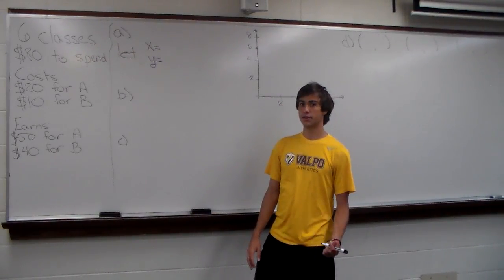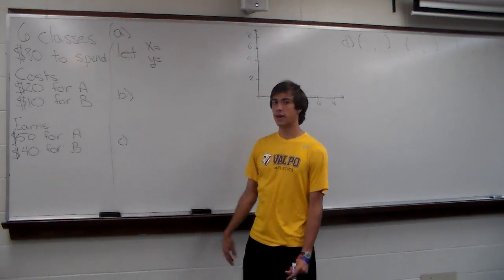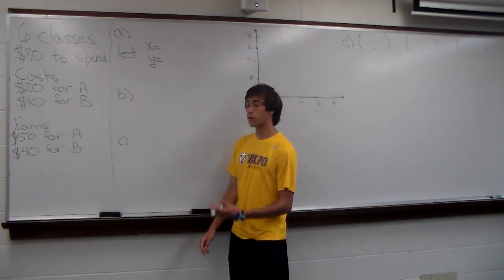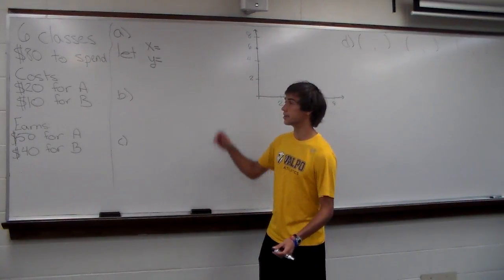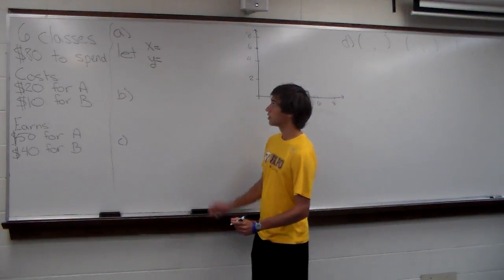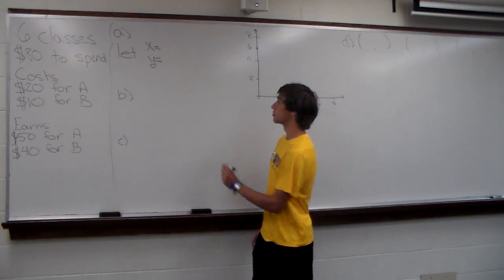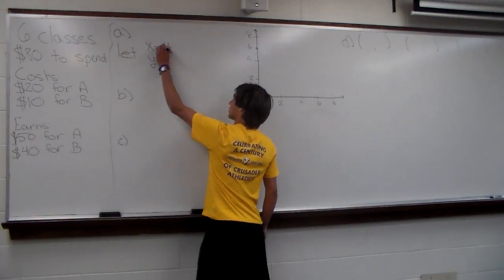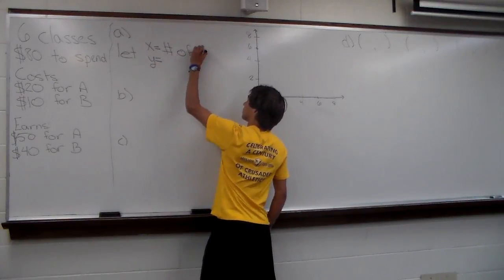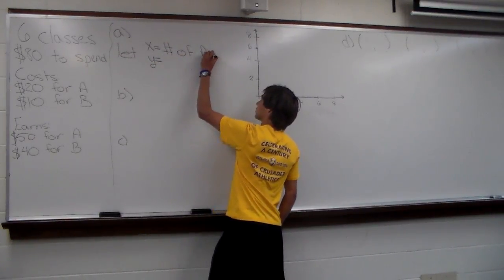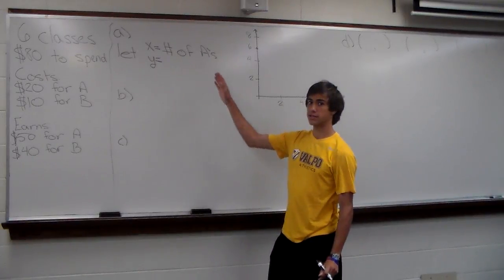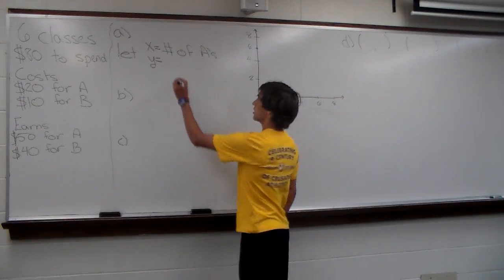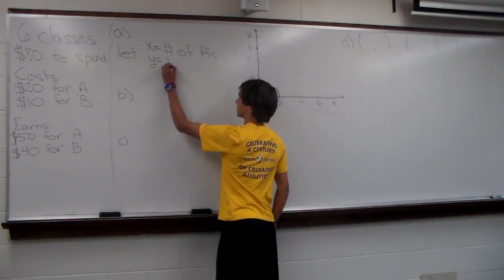The first thing we want to do in part A is define our variables. We're going to have some equations and inequalities, so we need to define what X and Y equal. We're going to let X be the number of A's Henry gets and Y be the number of classes in which Henry gets a B.